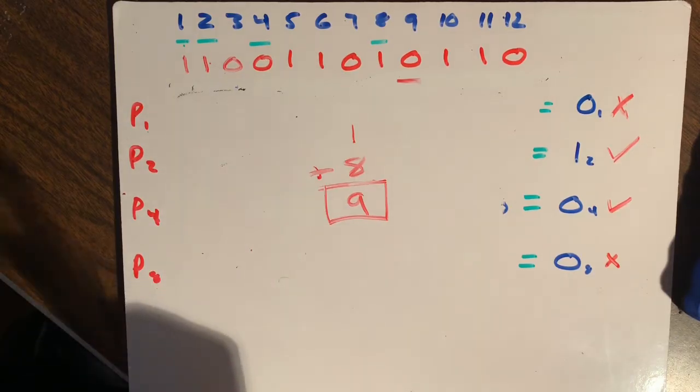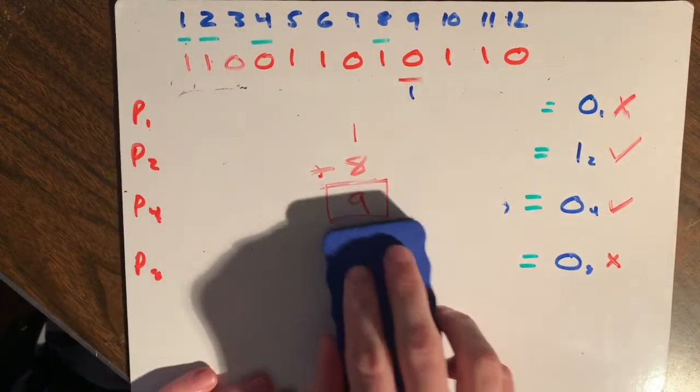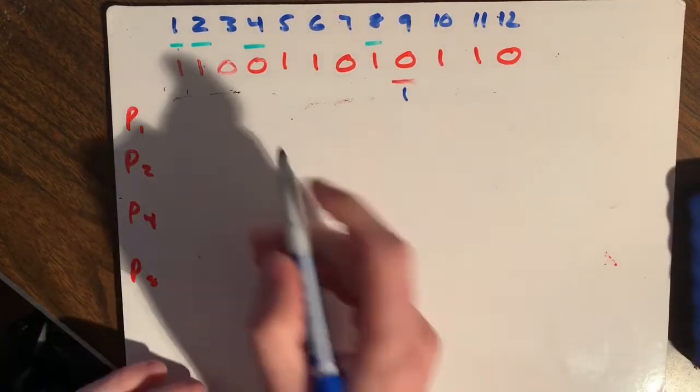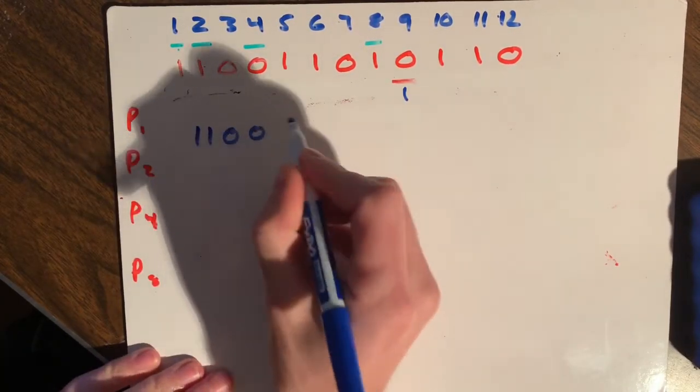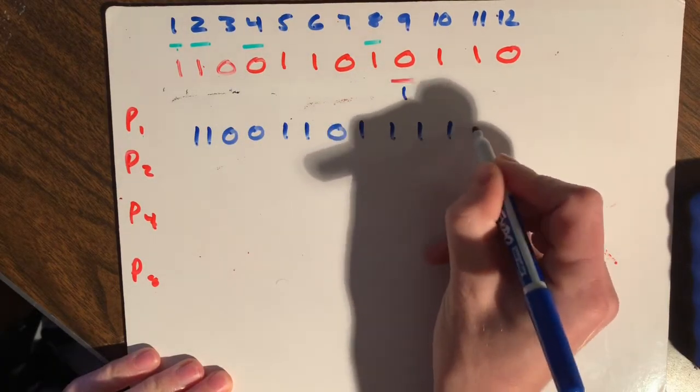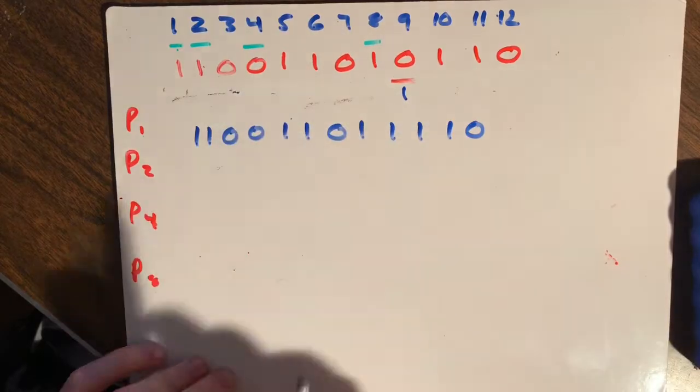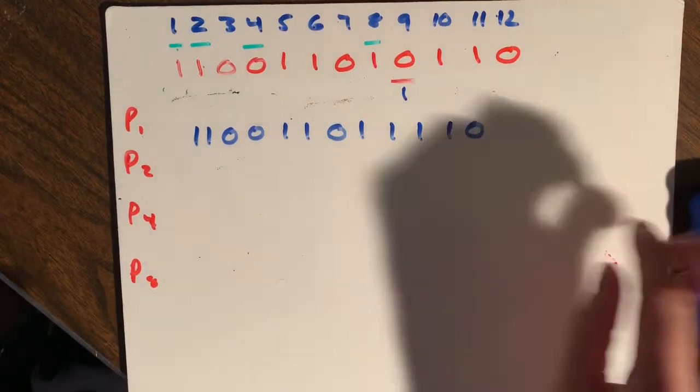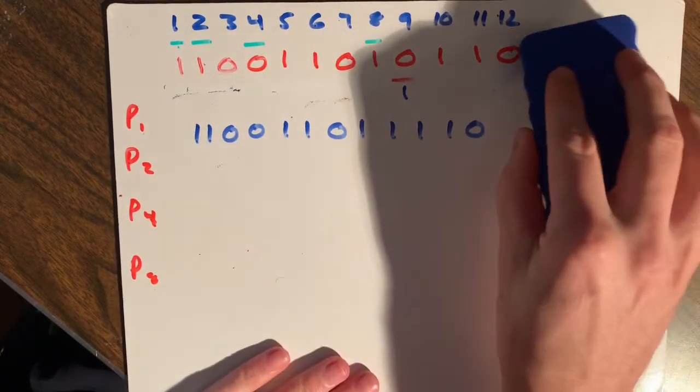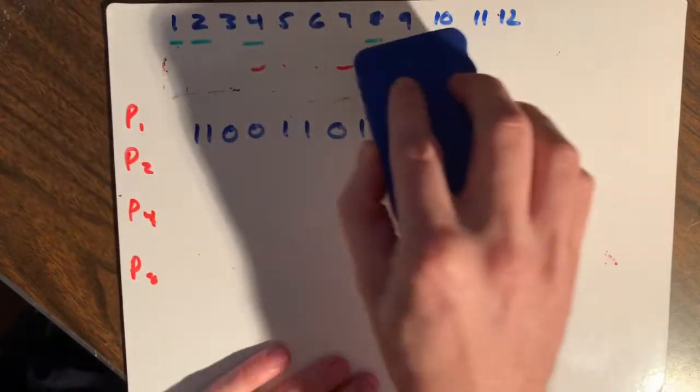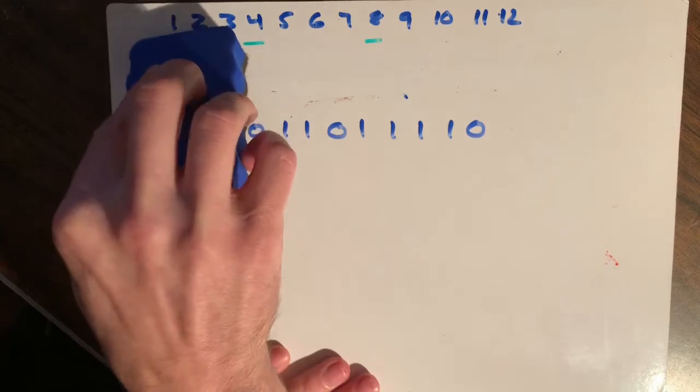...we actually want that to be a one. So the correct code for this would be one, one, zero, zero, one, one, one, one, one, one, zero. And again, that was the faulty bit there. What we can do now, if we're feeling a little ambitious, is actually plug this number in, and we can go through and check it and see if everything matches this time. And I think we'll just go ahead and knock that out.